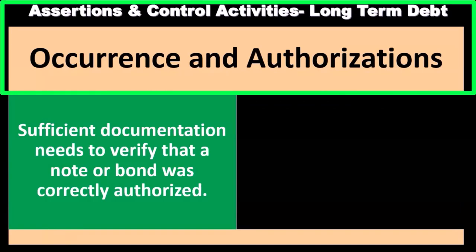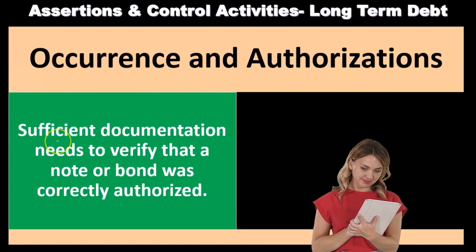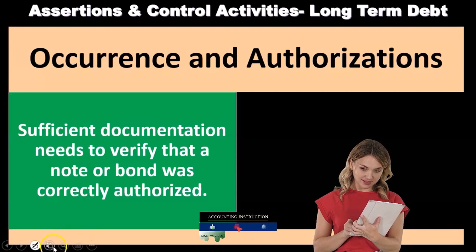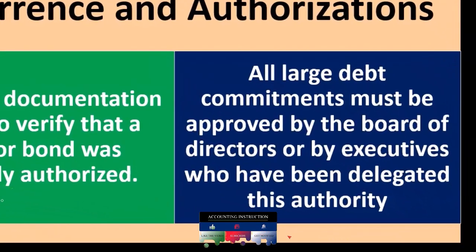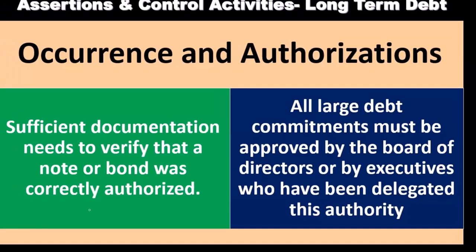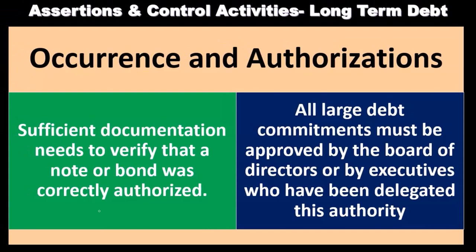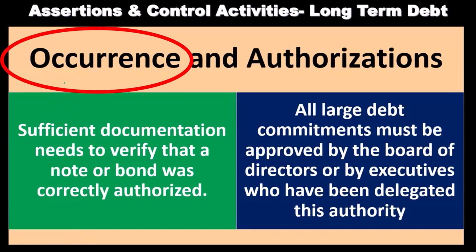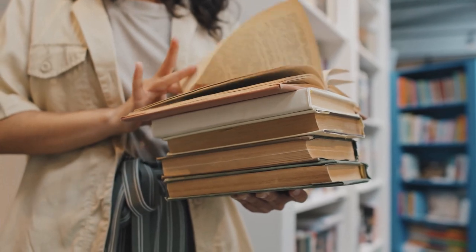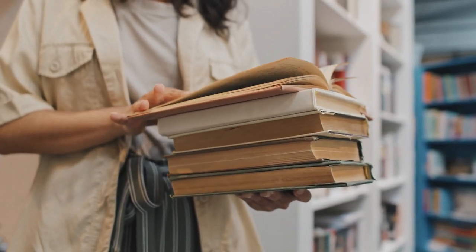Now we're going to think about the assertions and control activities related to long-term debt. We have the assertions of occurrence and authorization. Sufficient documentation is needed to verify that the note or bond was correctly authorized. All large debt commitments must be approved by the board of directors or by executives who have been delegated this authority. We want to make sure there has been the proper delegation of authority, since these could be large dollar amounts. Note that occurrence might not be as big a risk from an audit perspective, because occurrence would mean there's something on the books where no transaction actually relates to that item.